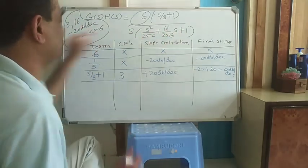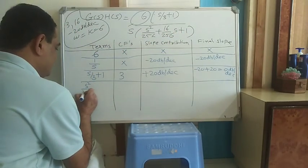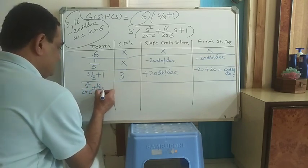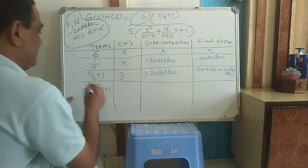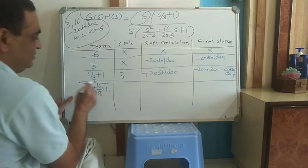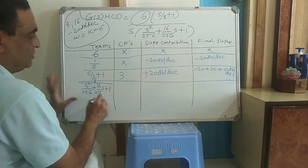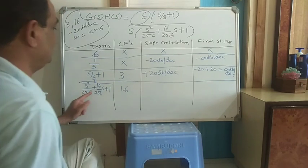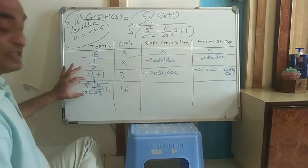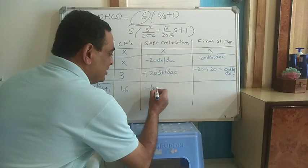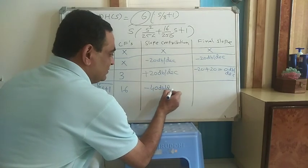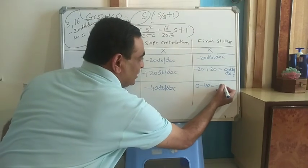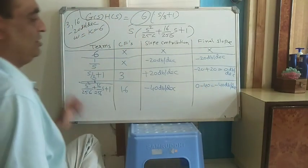At corner frequency 16, coming from the second-order denominator term 1/(s²/256 + 16s/256 + 1): since it is a second-order denominator term, the slope contribution is minus 40 dB/decade. The earlier slope was 0, so the final slope becomes 0 + (minus 40) = minus 40 dB/decade.